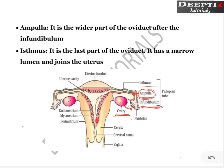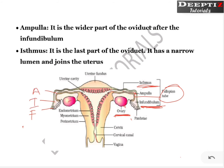Once the ovum is released and collected via the fimbriae and infundibulum, it reaches the ampulla. The egg will wait there for some time. If it encounters a sperm, fertilization takes place forming a zygote. That zygote travels back through the isthmus — the narrow tubular portion — and implants in the uterus. Both sides of the reproductive system have fimbriae, infundibulum, ampulla, and isthmus.